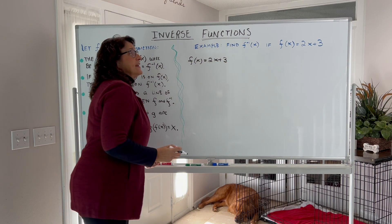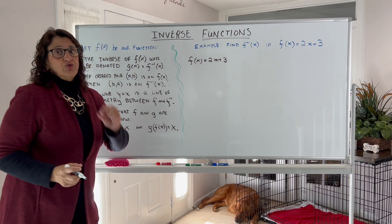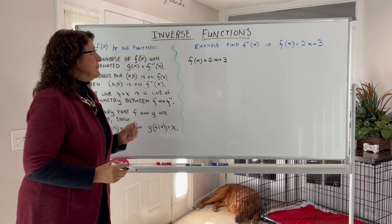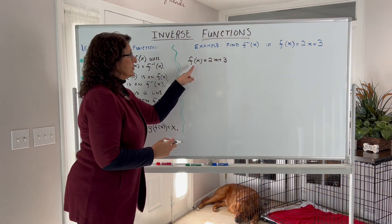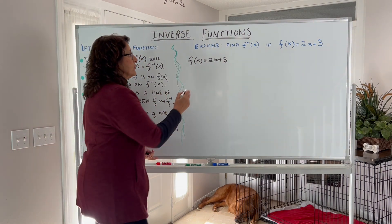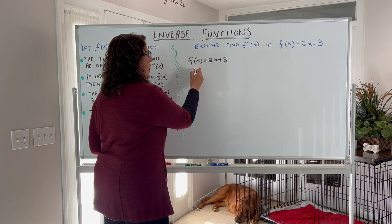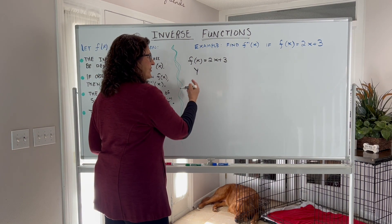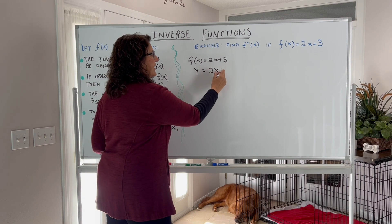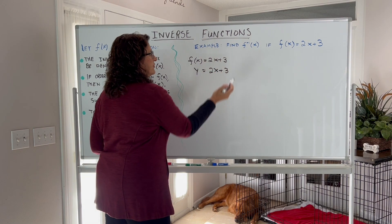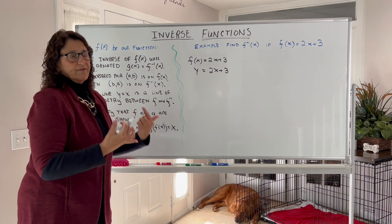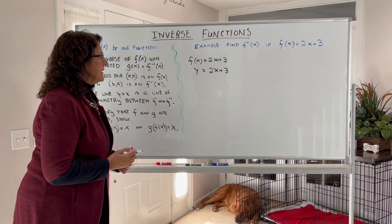So our function f of x is 2x plus 3, and we want to find the inverse. The technique you use to find an inverse function is: we're going to take our f of x and rename it — we're just going to call it y. f of x and y are the same thing; they're the function values.